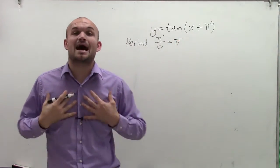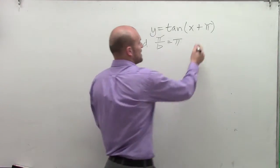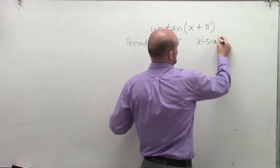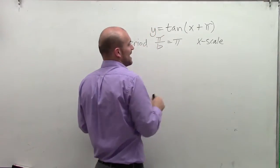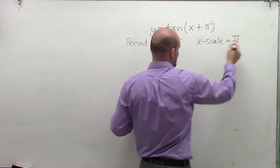Now the next thing is I personally like to find my x-scale for only my critical points. So to find my x-scale, I'm going to divide my period divided by 2. Therefore, my x-scale is going to equal pi halves.